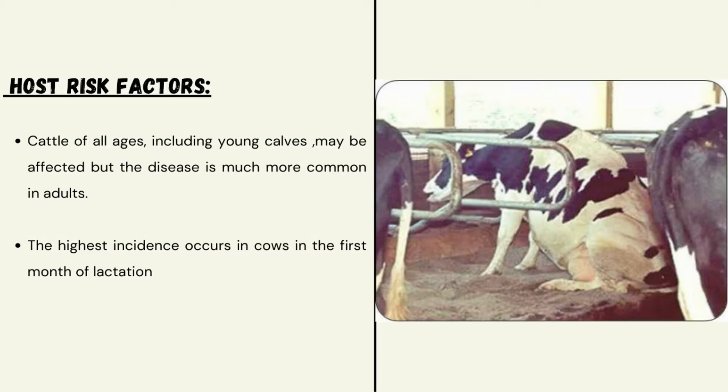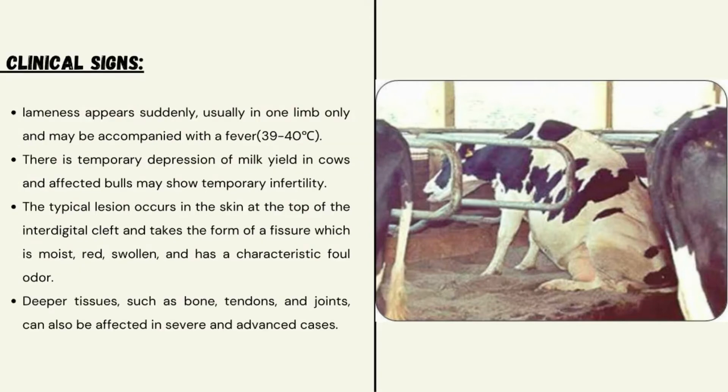Host risk factors: cattle of all ages including young calves may be affected, but the disease is much more common in adults. The highest incidence occurs in cows in the first month of lactation. Clinical signs of foot rot include lameness, which appears suddenly and is accompanied with a fever of 39 to 40 degrees.